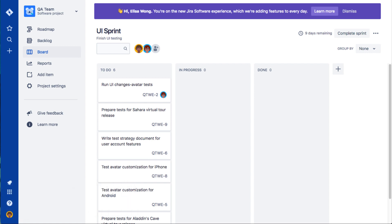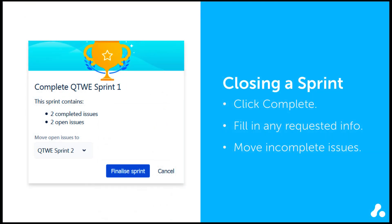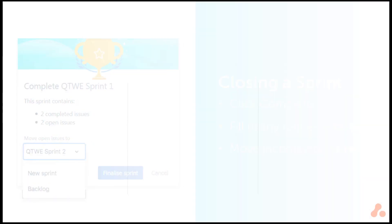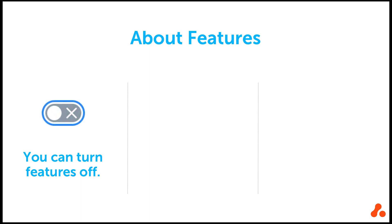The board for a Scrum project works like the board for a Kanban project. If you want to check out how to work on a board, view our video on board configuration using the link below this video. When it's time to close the sprint, just click Complete Sprint in the top right of your board and complete the requested information. If your team hasn't finished all the issues, you can choose to move those to the next sprint if you have future sprints set up, to a brand new sprint, or to your backlog. Note that backlog and sprints are two features your next-gen Scrum board has automatically turned on — don't accidentally turn them off unless you are trying to convert your project to a more Kanban-based approach.